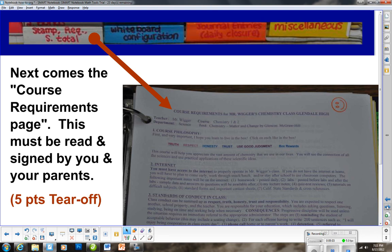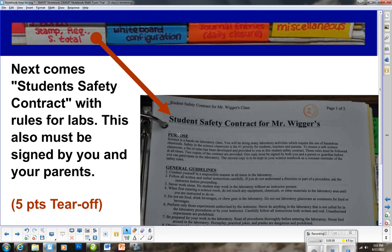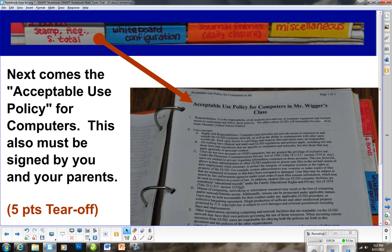Student safety contract is what you're going to need for the laboratories. When we do a lab, student safety contract rules must be followed. This also has a tear off, and that's another five points. Acceptable use policy for computers is expected to be signed ASAP because this tells what you can and cannot do with computers.